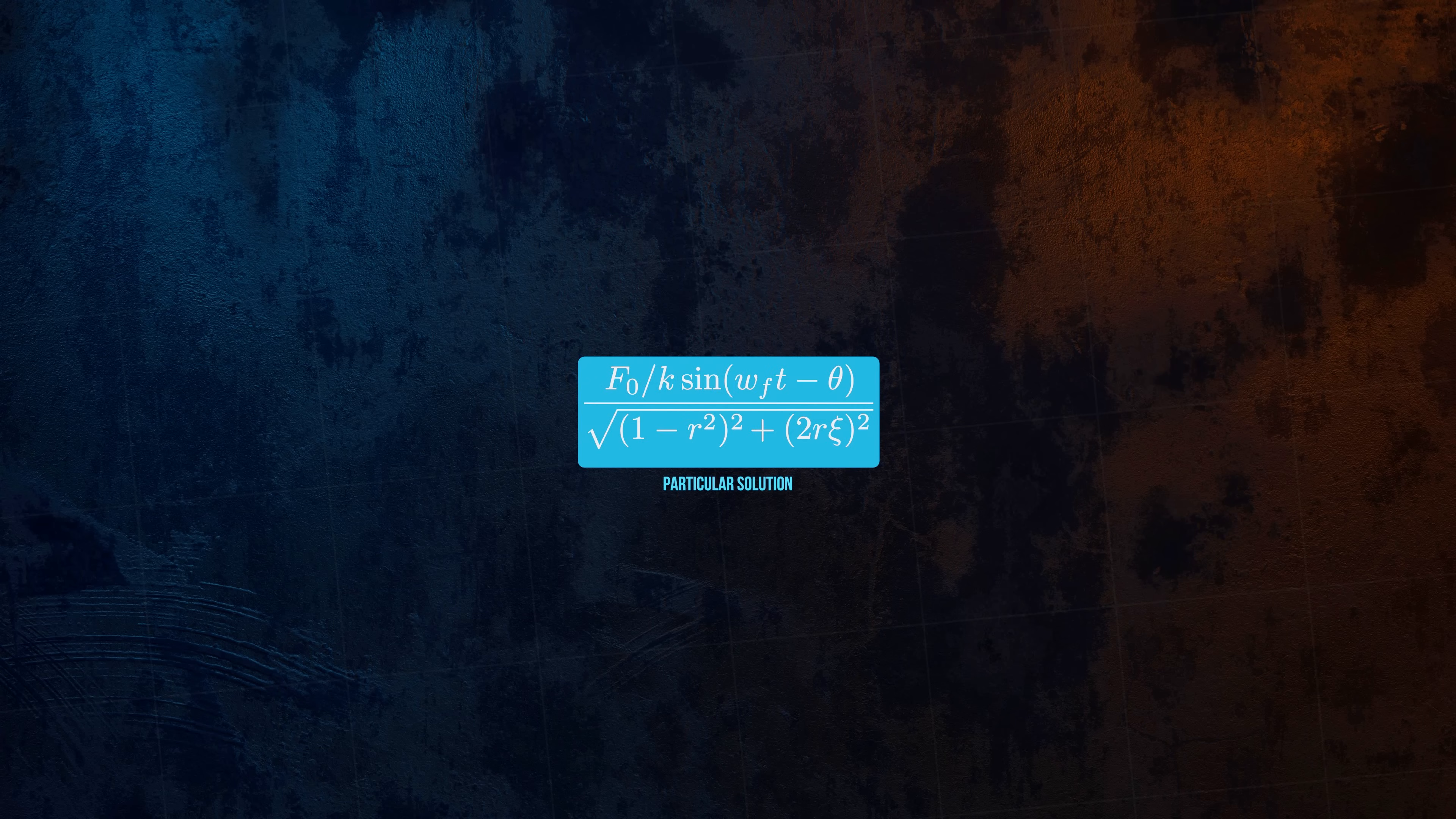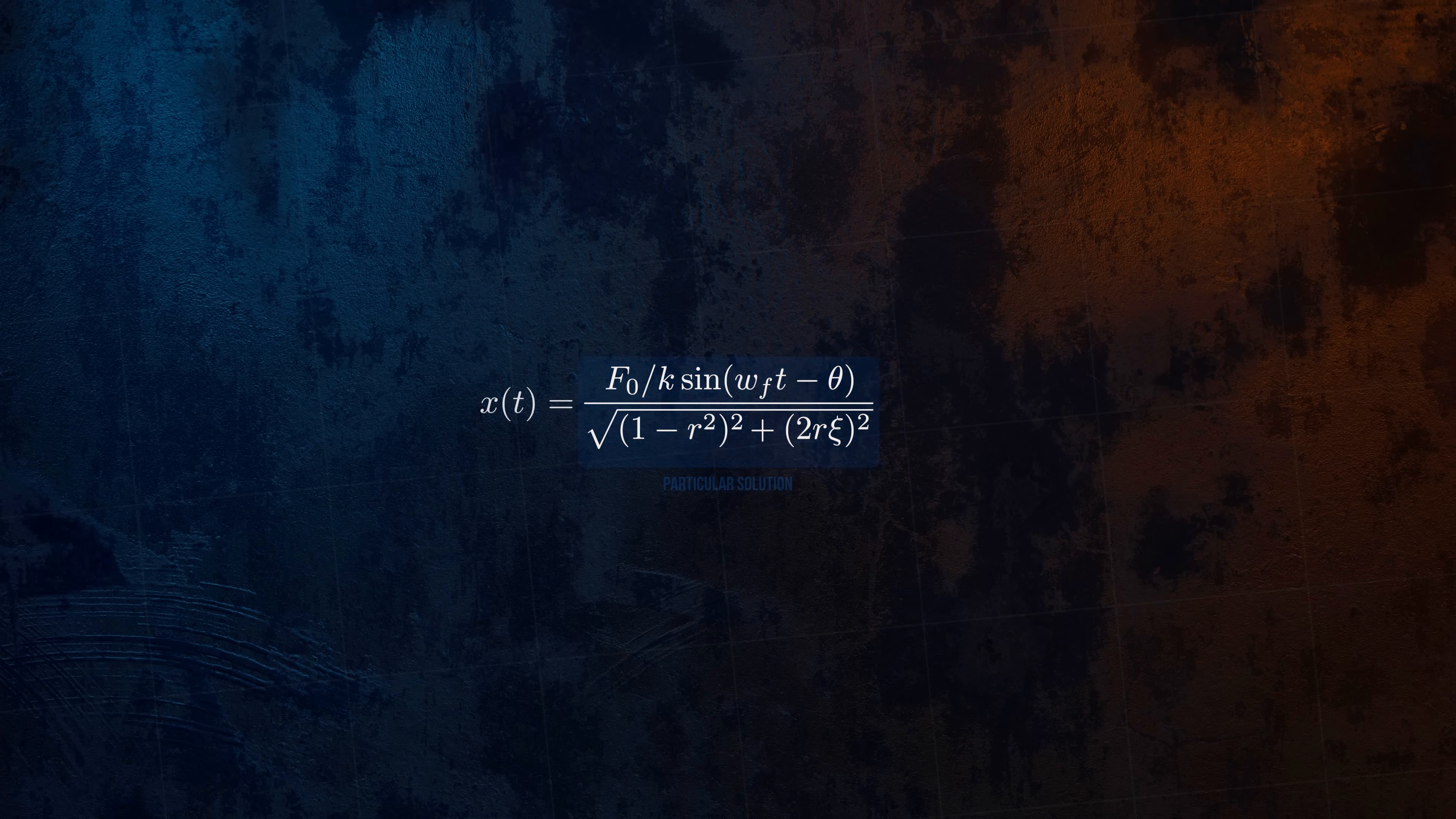Something interesting happens to the steady state response when the frequency of the forcing load is very close to the natural frequency of the system. R approaches one, and so the first term in the square root is close to zero. And if the system has very little damping, the second term will also be close to zero, which means that the displacement will become very large.